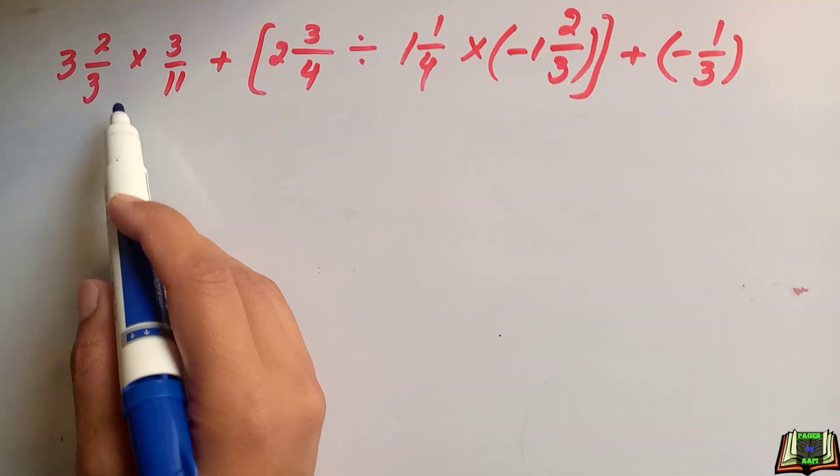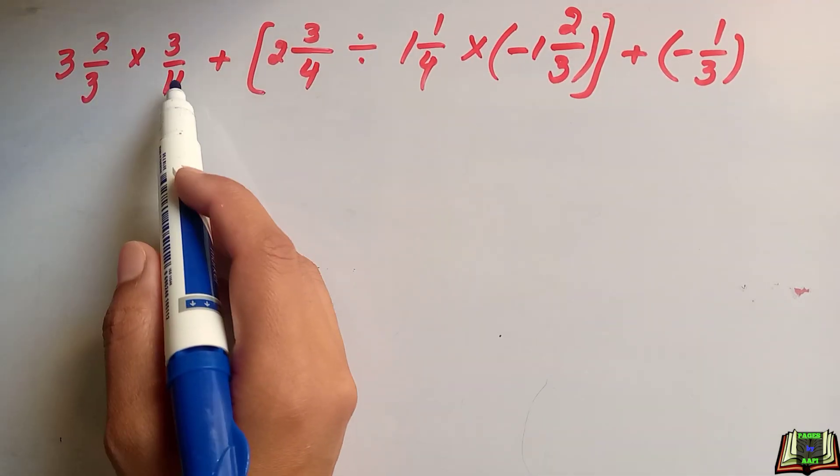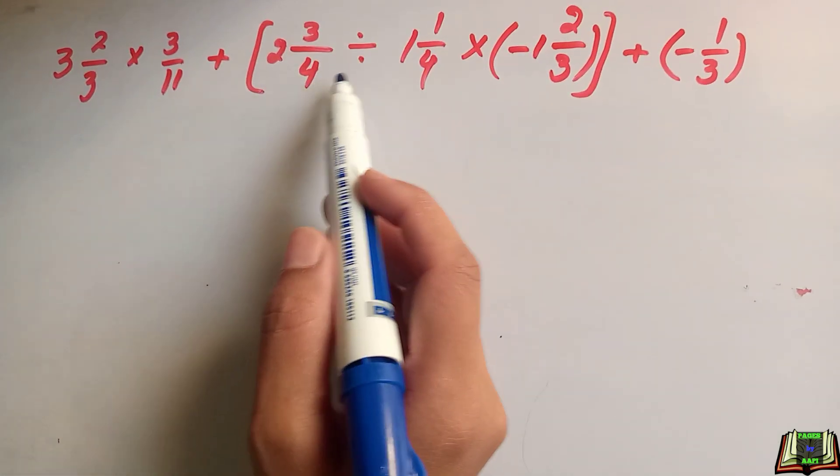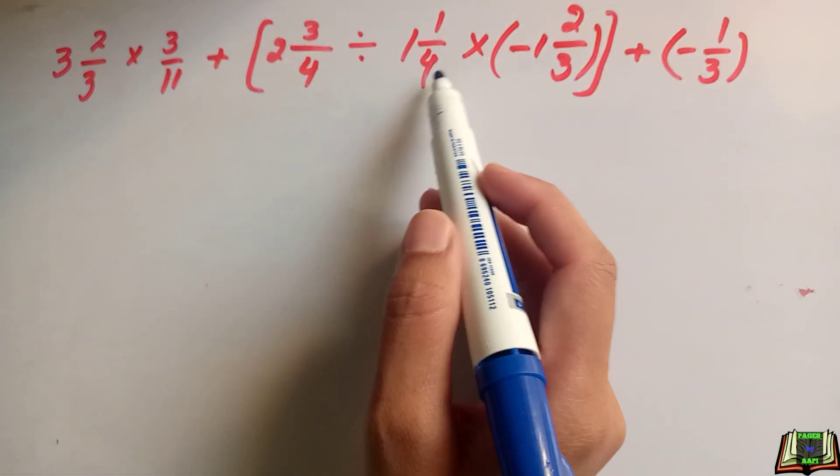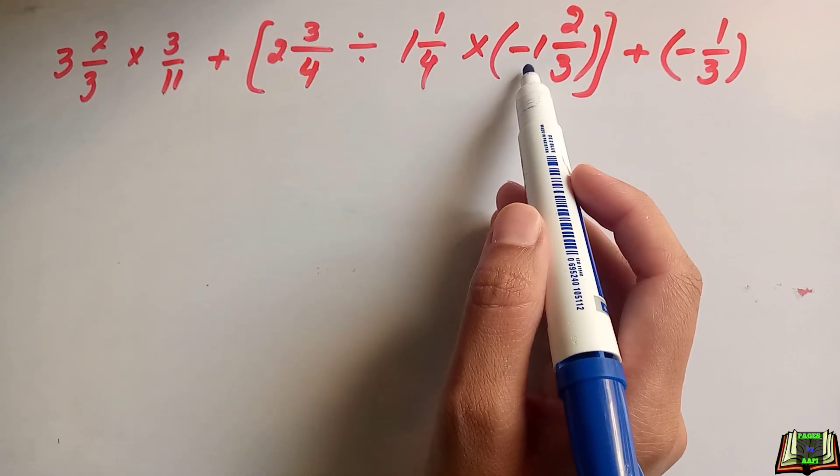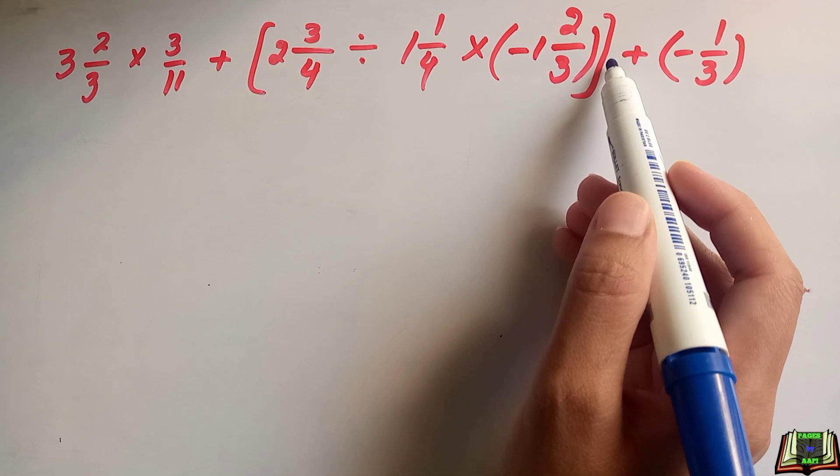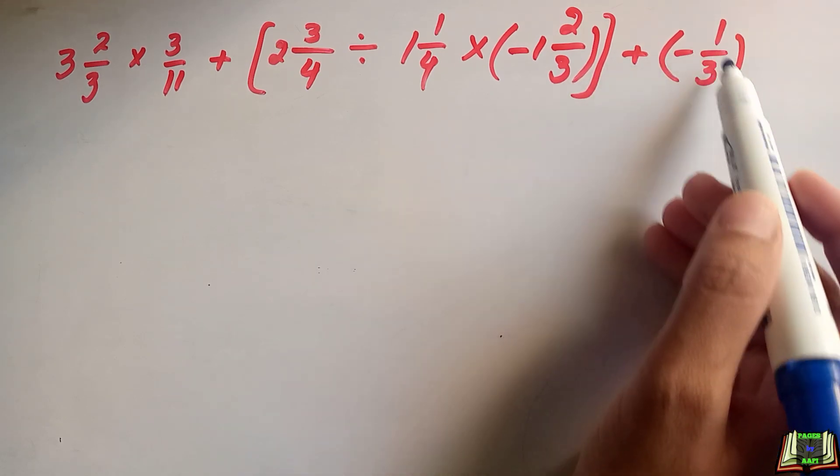Let's get started and look at the question. The first question is: 3 and 2/3 multiply by 3/11 plus [square bracket start] 2 and 3/4 divided by 1 and 1/4 multiply by [bracket] minus 1 and 2/3 [bracket close, square bracket close] plus [bracket] minus 1/3 [bracket close].